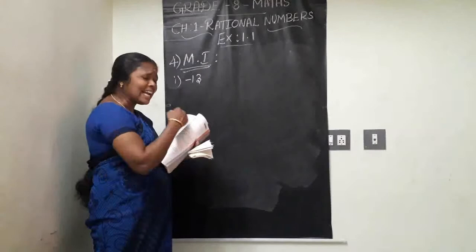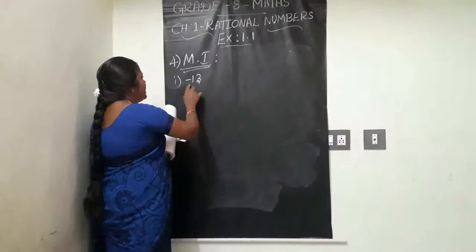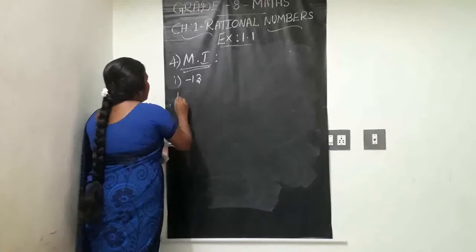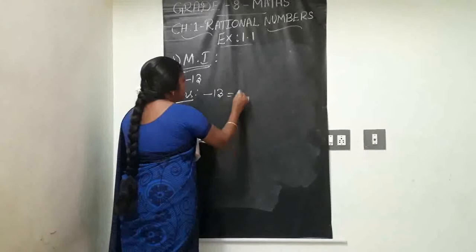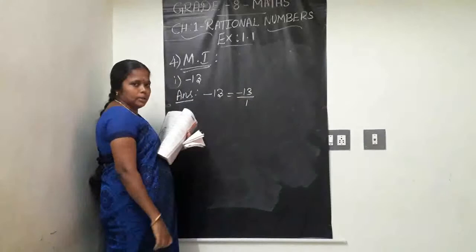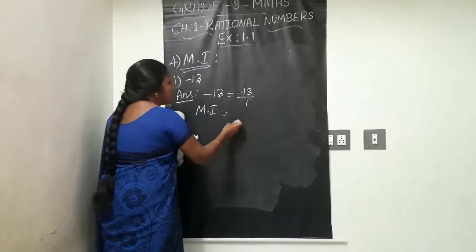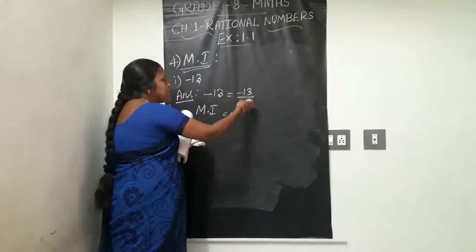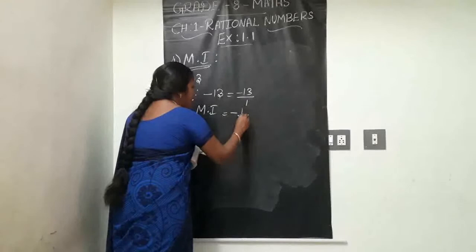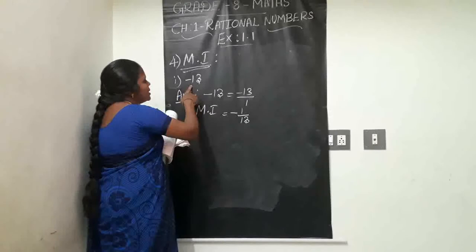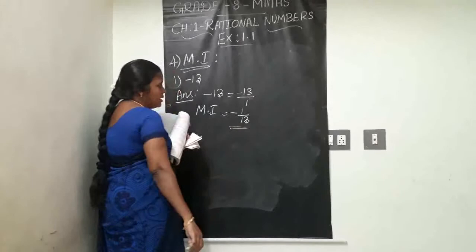First question: minus 13. We have to write its multiplicative inverse. Actually, what is minus 13? It is an integer. So we write it as a rational number: minus 13 by 1. Now for the multiplicative inverse, the sign remains the same; only the numerator and denominator are swapped. So 13/1 becomes 1/13. Therefore, the multiplicative inverse of minus 13 is minus 1/13.